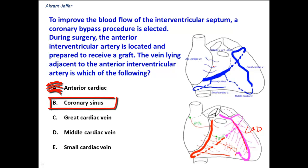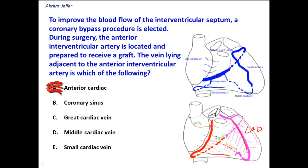Coronary sinus? The coronary sinus is located on the posterior surface of the heart, just below the left atrium. It's the main channel that drains the venous blood from the heart, and it's not located in the anterior interventricular groove.